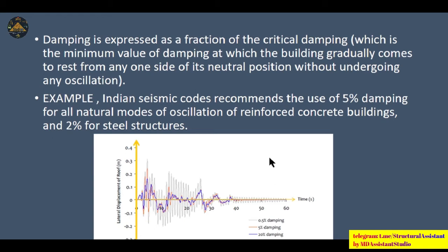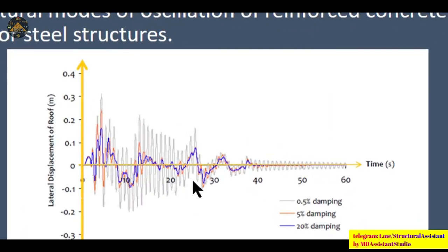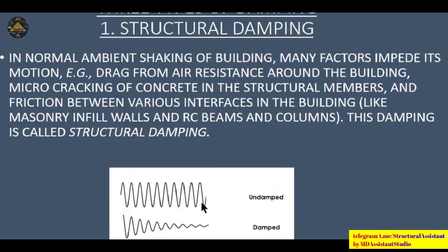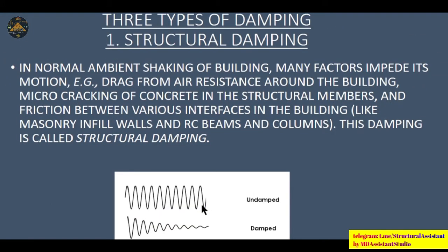Indian codes allow 5% damping for reinforced concrete structures and 2% damping for steel structures. Here you can see that the gray areas denote 0.5% damping, and the displacement is very high. For 5% damping, shown by the orange line, displacement is somewhat less. At 20% damping, the displacement is even less. So the more the damping, the lesser the displacement will be.